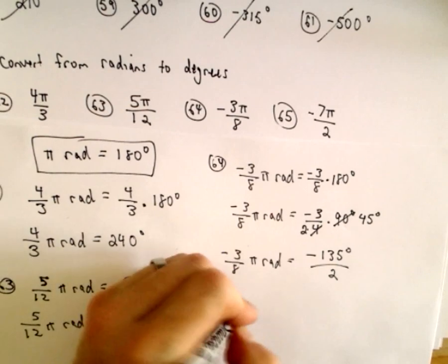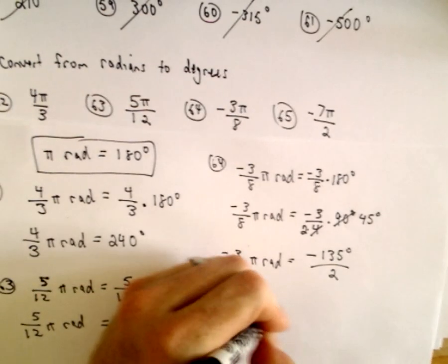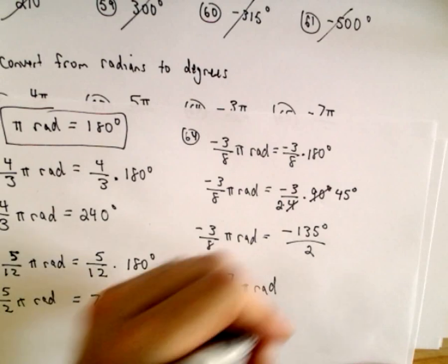Last but not least 65, we'll just multiply both sides by negative 7 over 2.